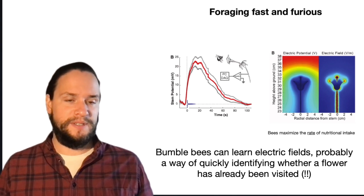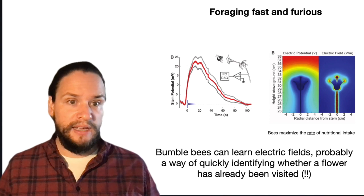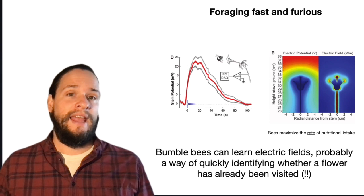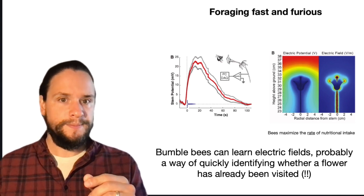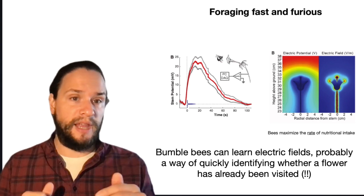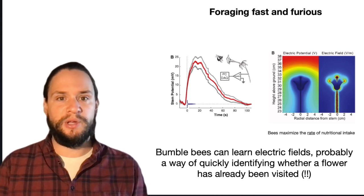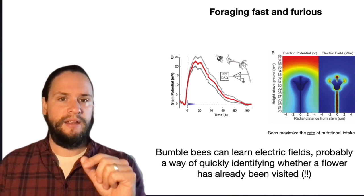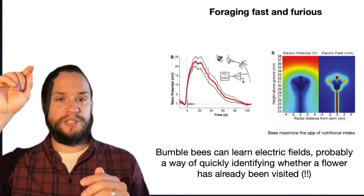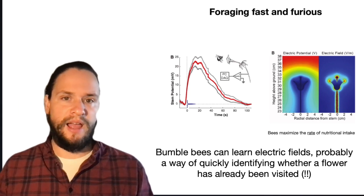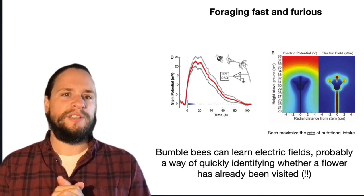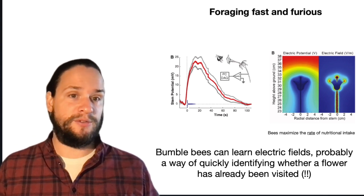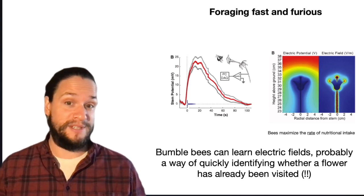So bumblebees like us or any living organism have a small electric charge in their body. And it turns out when they land on a flower, they transfer some of that electric charge to the flower. And so this is the diagram on the left you're looking at here. This is the electric potential in a flower stem as a bee visits. So it charges up and then slowly decays over time as the bee leaves. And so it turns out bees can learn the sort of shape and intensity of those electric fields when they're making decisions on what flowers to visit.